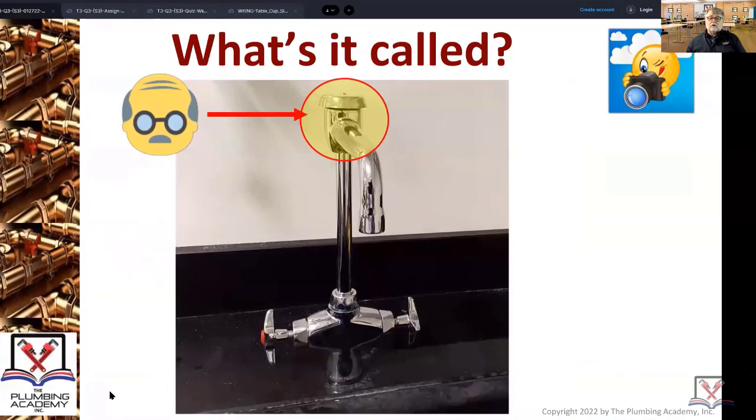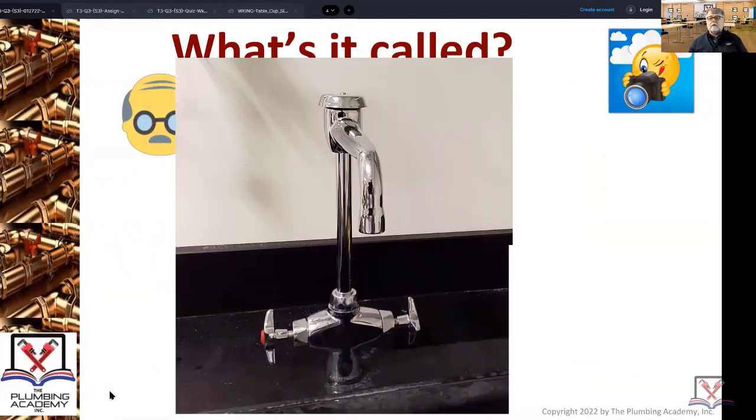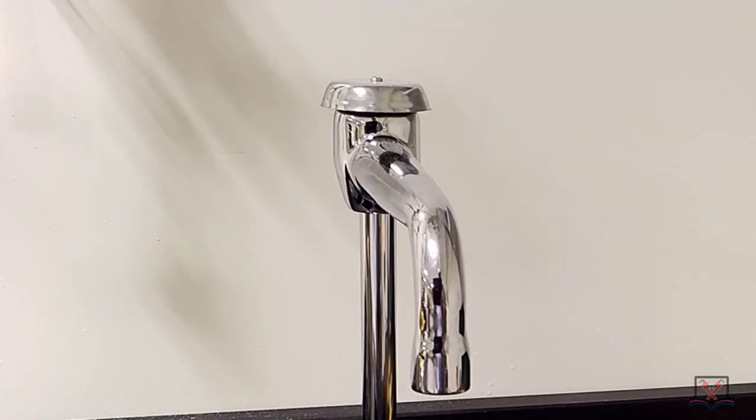So what is it called? Atmospheric vacuum breaker. Notice with atmospheric vacuum breakers, it's circled in yellow because atmospheric vacuum breaker is a simple backflow device. It can never have a shutoff valve of any type on the outlet side.